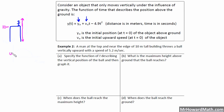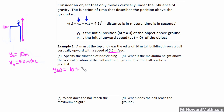Our y₀ equals the initial position above the ground, so we're assuming he's letting it go right at the top of the building: 10 meters. Our v₀ is the initial speed, given as 5.2 meters per second. So our function is: y(t) = 10 + 5.2t − 4.9t². Note: I'm drawing the t's with hooks on the bottom so you don't confuse the plus sign with the variable t.